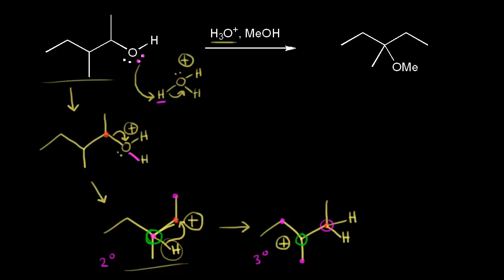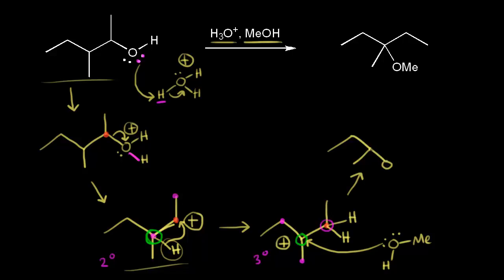Now we've formed our electrophile and our nucleophile will come along in the next step — our nucleophile is methanol. A lone pair of electrons on the oxygen of methanol are going to form a bond with the carbon circled in green. Now we're forming a bond between the carbon in green and this oxygen. We still have a methyl on this oxygen and a hydrogen on this oxygen. These electrons in blue on the oxygen form the bond between the oxygen and the carbon. We still have a lone pair of electrons on this oxygen, which gives the oxygen a plus one formal charge.